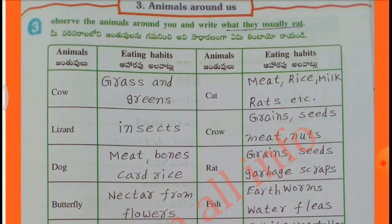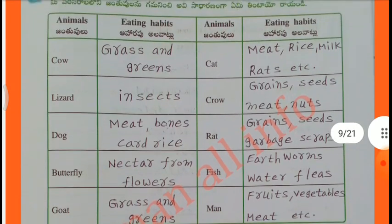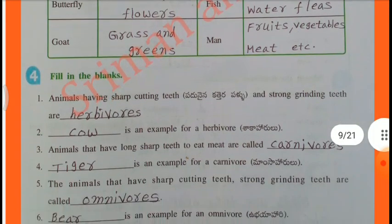Observe the animals around you and write what they usually eat. Animals and eating habits: Cow - grass and greens; Lizard - insects; Dog - meat, bones; Butterfly - nectar from flowers; Goat - grass and greens; Rat - grains, seeds, garbage; Crow - grains, seeds, meat, nuts; Fish - earthworms, water plants.